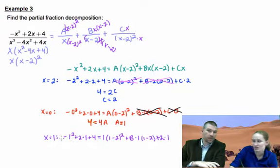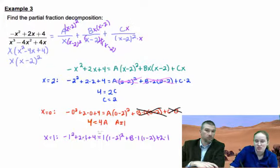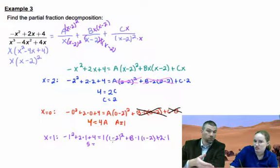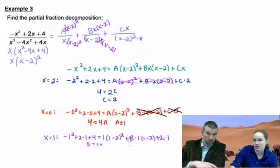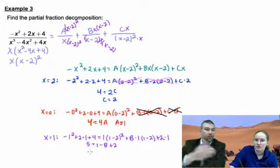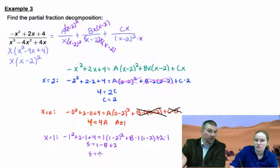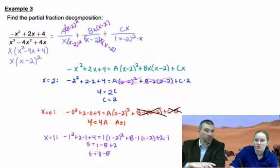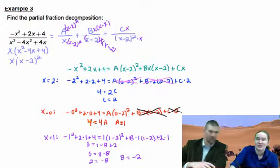Now nothing cancels out, we've just got a bunch of math. Negative one plus two plus four, that's five. This is negative one squared which is one times one is one, so one plus—this is negative one times B, so that's actually one minus B plus two. That's five. Now a complicated pre-calc problem boils down to a fairly simple algebra one problem. Subtract the three and get two equals negative B, so B should equal negative two.